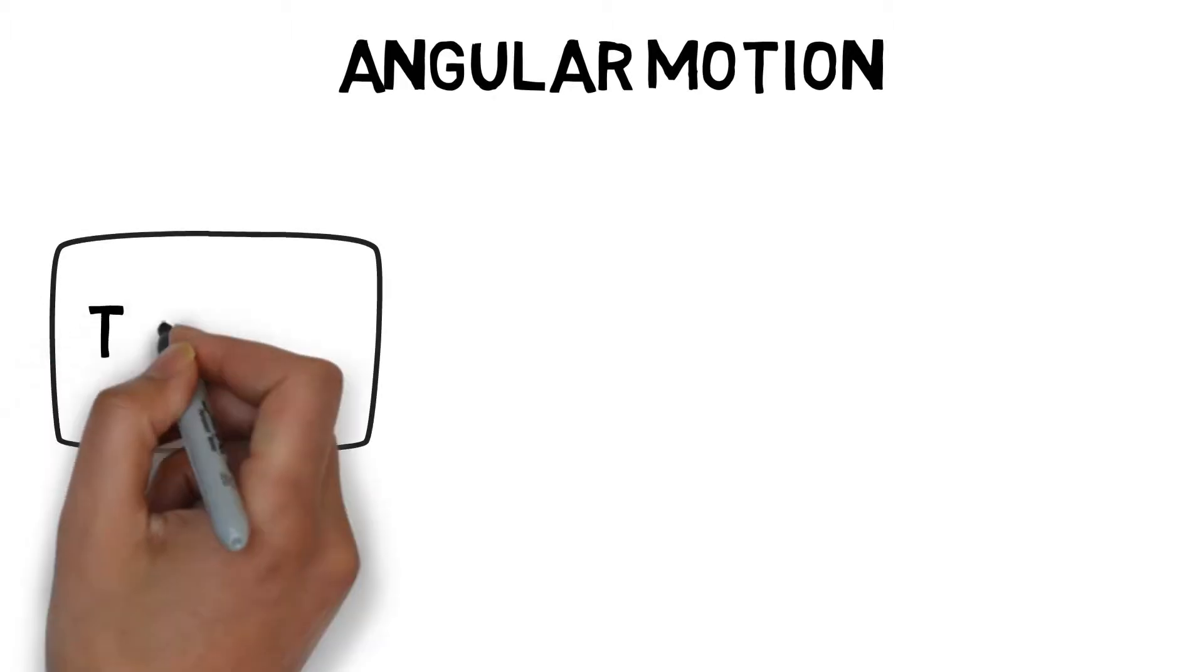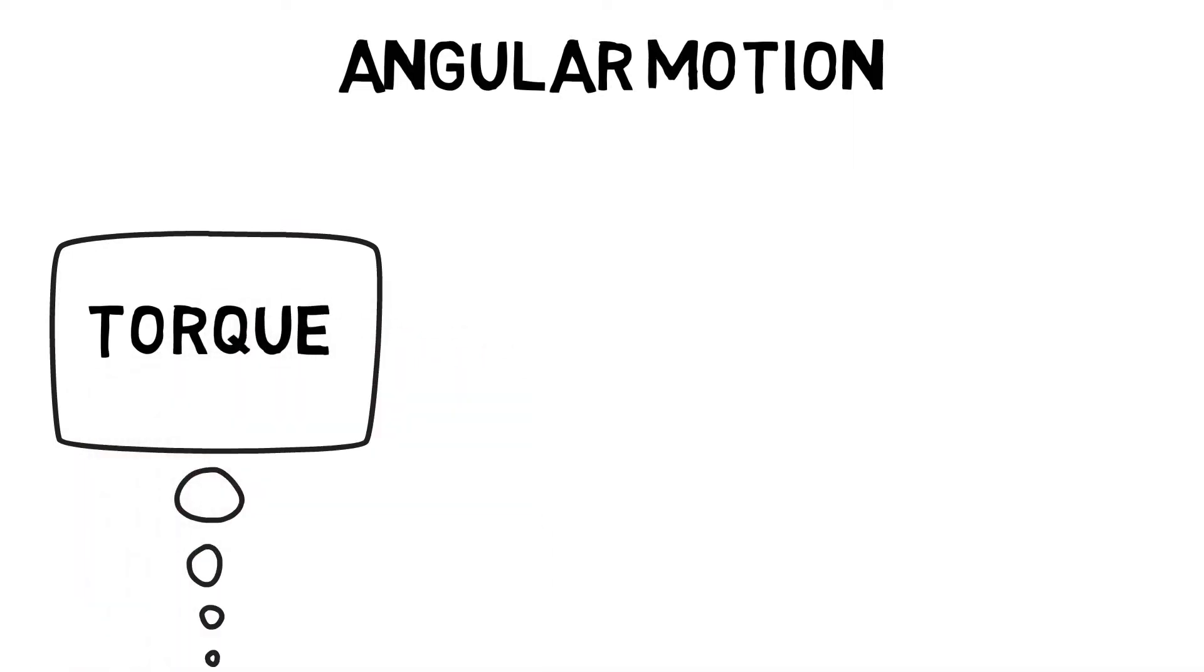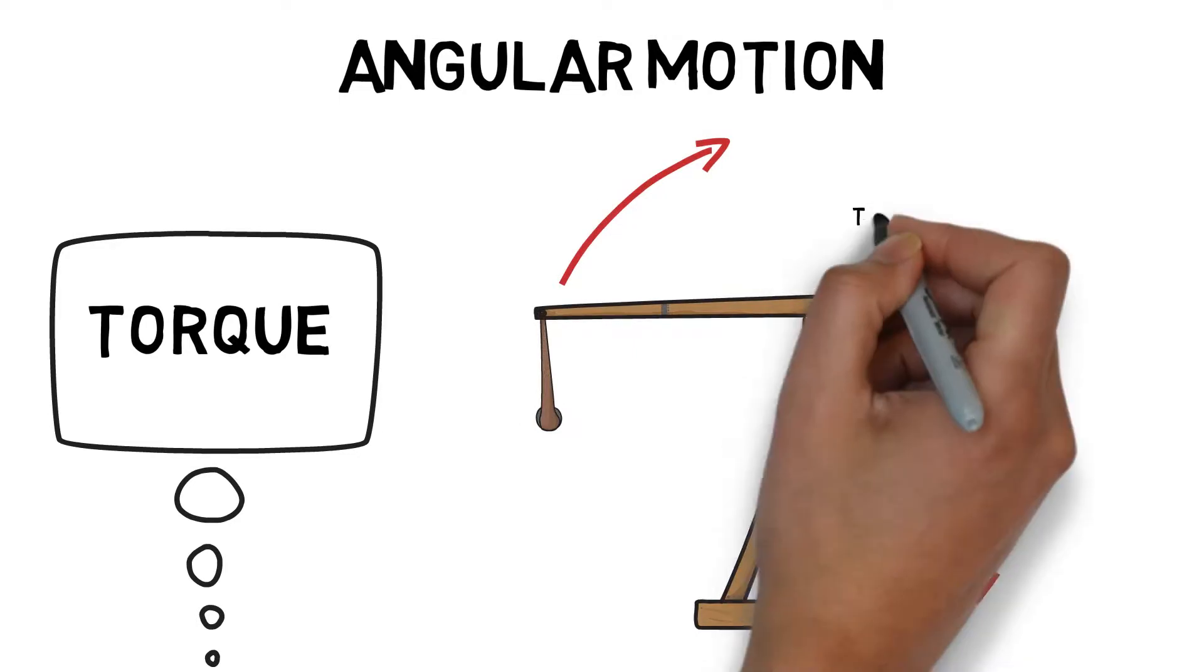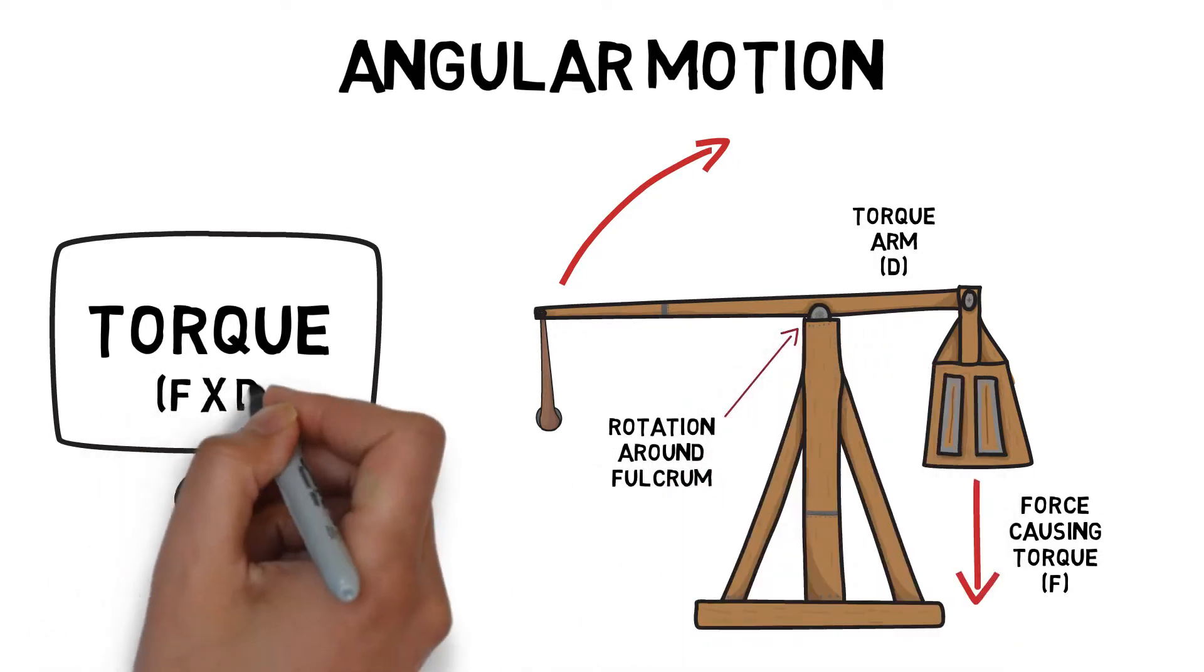Torque is the rotational force that causes an object to turn around its axis of rotation. Torque can be measured by taking force times the distance of the moment arm from the fulcrum or axis of rotation.